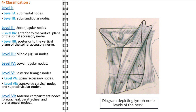Level 6, known as the anterior compartment nodes, includes the pretracheal, paratracheal, and prelaryngeal nodes. Central in location, they collectively drain the thyroid gland, trachea, and larynx. As we explore these levels, keep in mind their importance in the staging of neck cancer, planning surgical interventions, and predicting the spread of infections or malignancies within the head and neck regions. Our understanding of these lymphatic levels will significantly aid in clinical practices, enabling us to better diagnose, manage, and treat the various conditions that affect the head and neck.